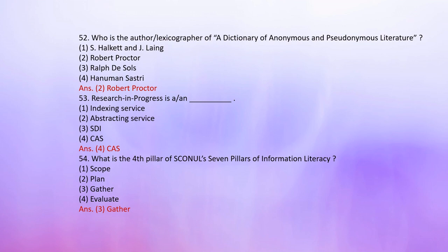Number 53: Research in Progress is — 1. Indexing service, 2. Abstracting service, 3. HDI, 4. CAS. The correct answer is 4: CAS. Number 54 (listed as 55): What is the 4th pillar of SCONUL's 7 Pillars of Information Literacy? 1. Scope, 2. Plan, 3. Gather, 4. Evaluate. The correct answer is 3: Gather.